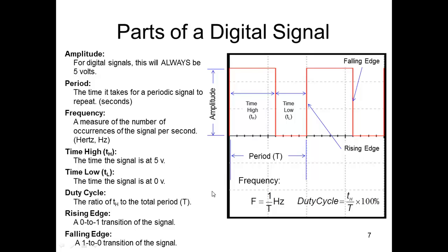The time high would be the time the signal is at five volts. So here. Alright, that would be the time high while it's up. Time low would be here while it's at zero.